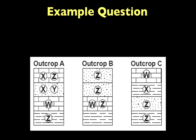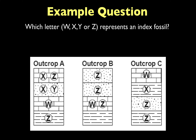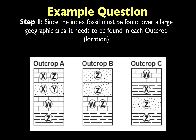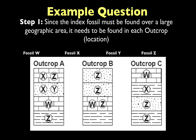We're going to go through an example of how to identify an index fossil from different diagrams. We need to know which letter — W, X, Y, or Z — represents an index fossil. Remember the criteria: index fossils need to be found over a large area for only a short period of time. The fossil needs to be found in each outcrop, meaning each location, in order to be considered an index fossil.